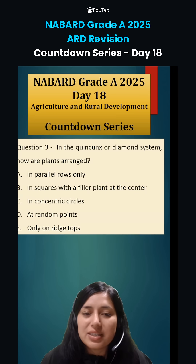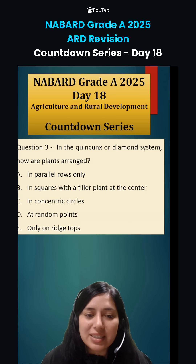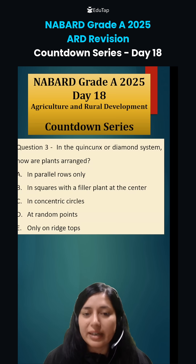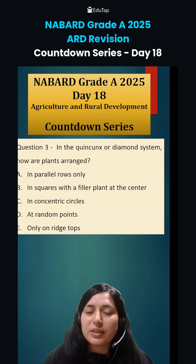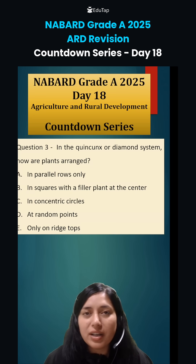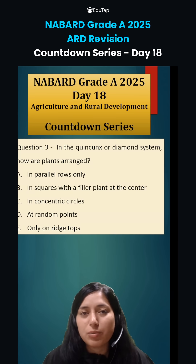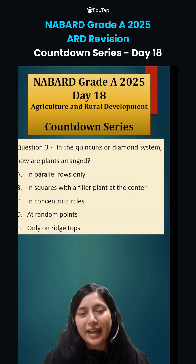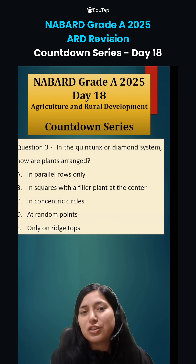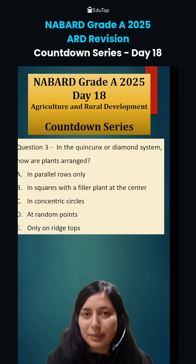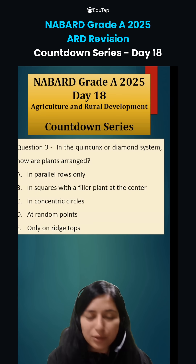The next question is: in the quinquus or diamond system, how are plants arranged? First, you need to understand what the quinquus or diamond system of plant geometry is. These are your questions of day 18. I hope you have enjoyed. Please do let me know the answers in the comment section. Thank you so much.